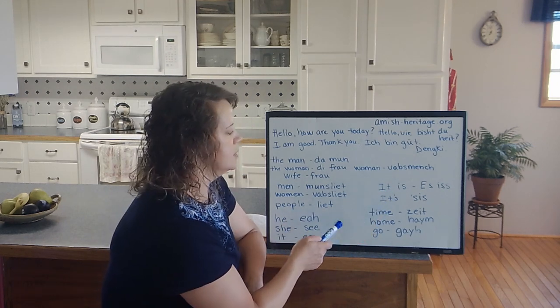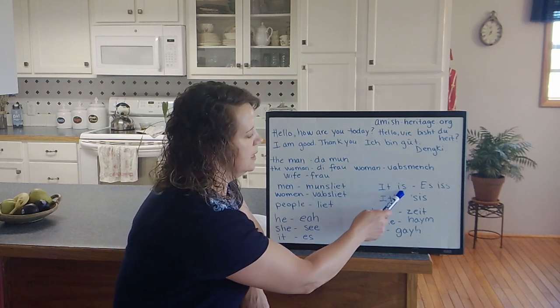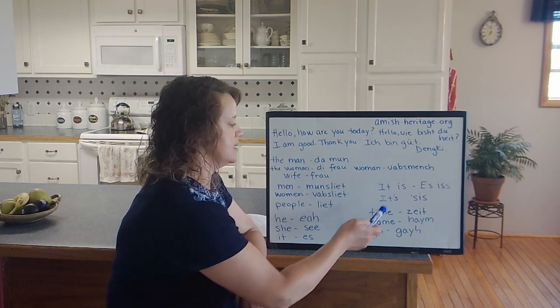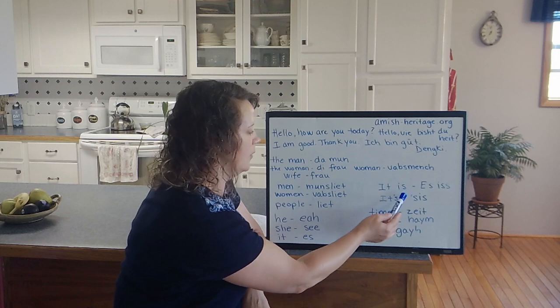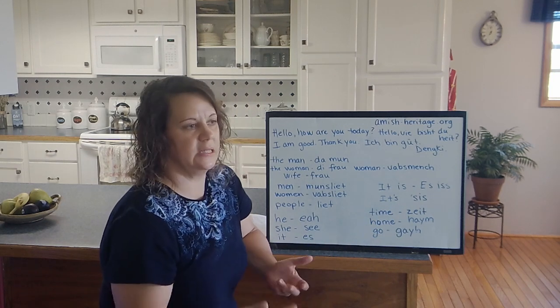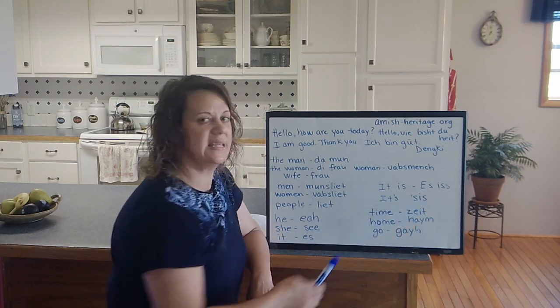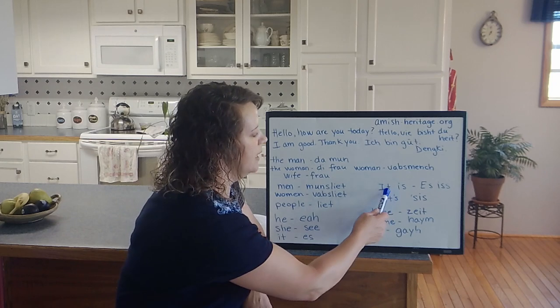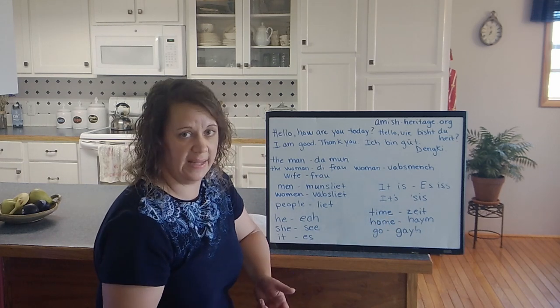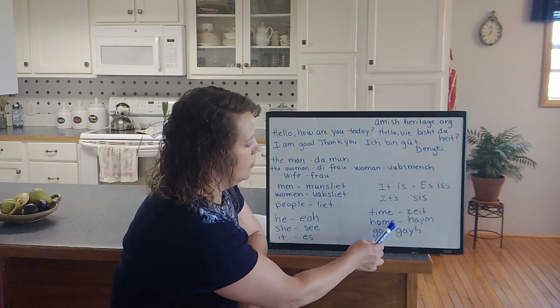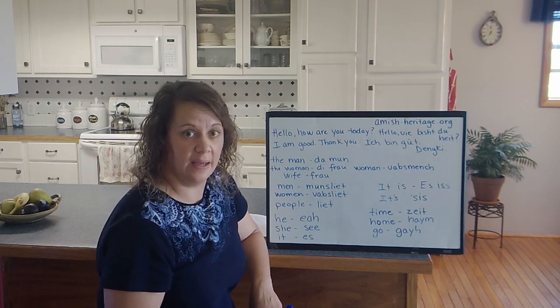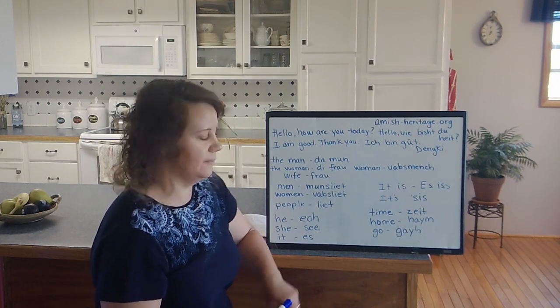Some phrases that I thought we would go over today include it is. It is is es is. I didn't know if I should put the double s in there, but it's not is, it's is, more like an s sound in there. When you're saying a phrase like it is time to go, you would put it together as it's time to go, then you would use it as sis. It is is es is, and its is sis. Time, the word time is tight. And home is ham. Go is ga.